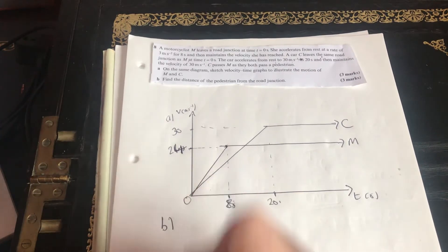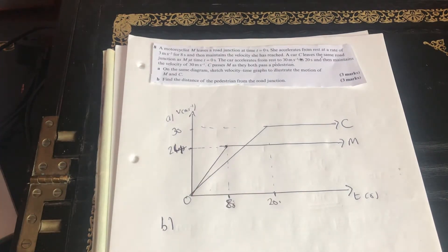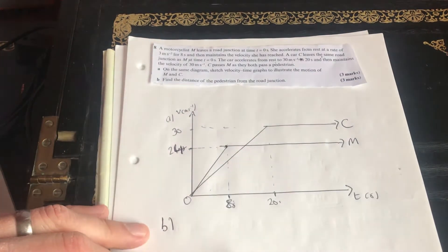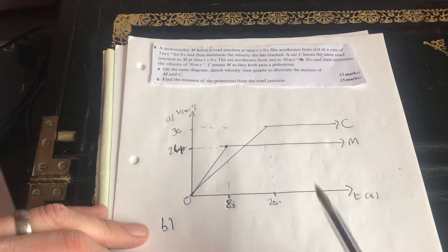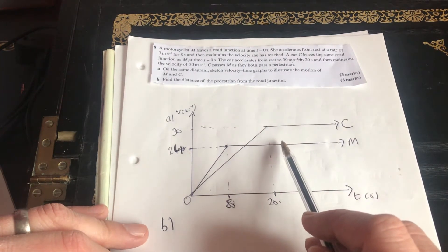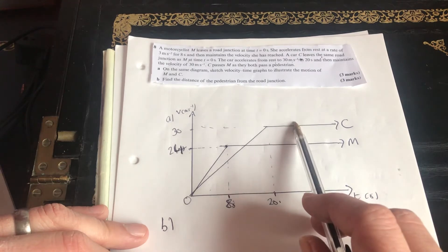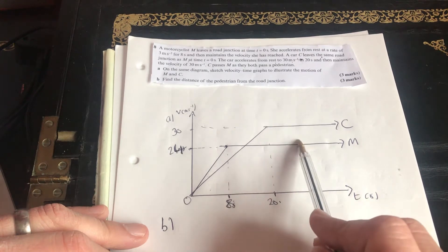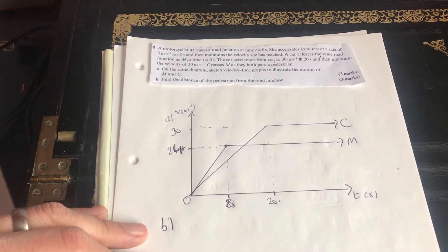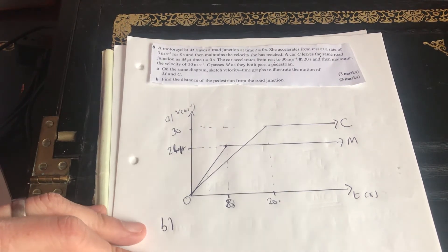Now for B, what we have is a problem where we've got to find the distance of the pedestrian from the road junction. Now the information we have is that the car passes the motorcyclist as they both pass a pedestrian. That means they've all traveled the same distance.